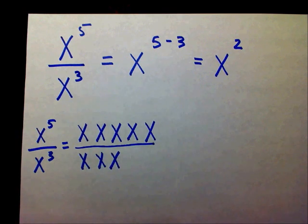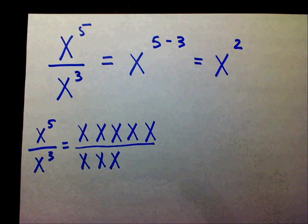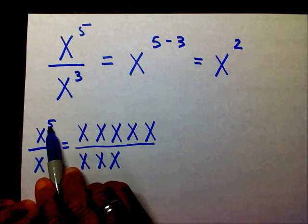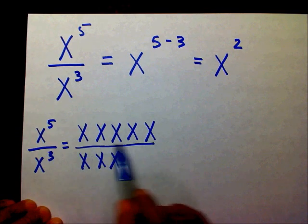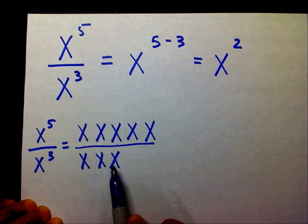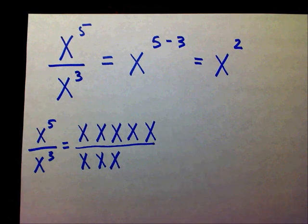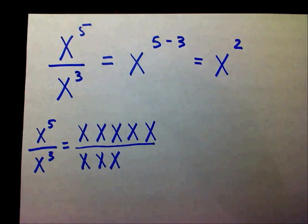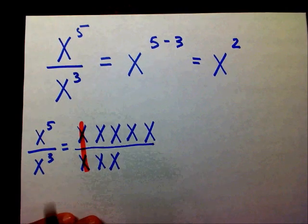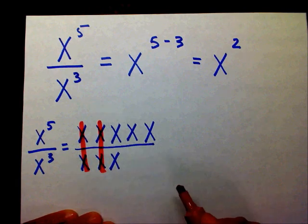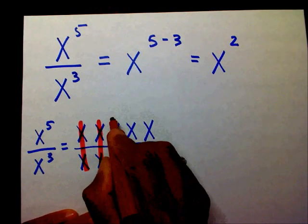If you don't understand where I got the five x's or the three x's from, please watch my video on multiplying exponents with like bases. So x to the fifth really means x times x times x times x times x, divided by x times x times x. With fractions, you know that if you have the same thing in your numerator as in your denominator, they cancel each other out. Since I have an x in the top and an x in the bottom, they cancel. I have another x on top and x on the bottom — they cancel. And again — they cancel.